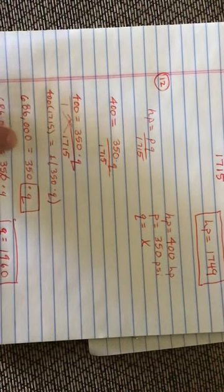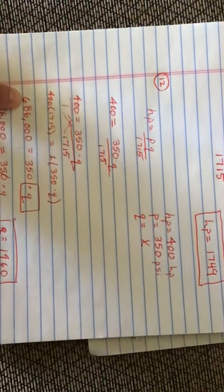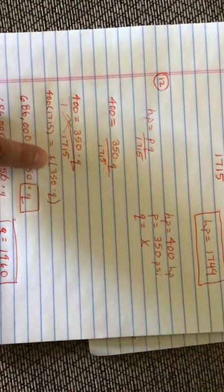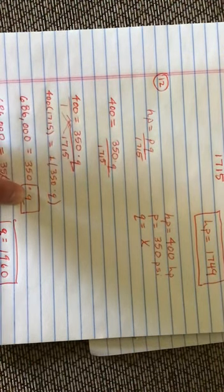So when I multiply these two together I got 686,000, which is equal to, of course, this 1 times this is just the same setup again.